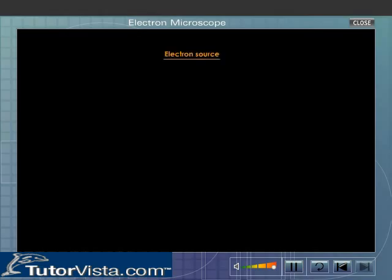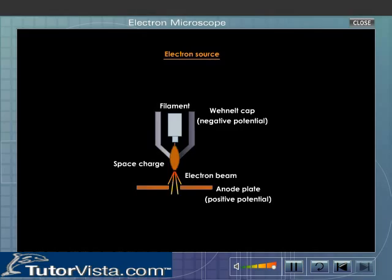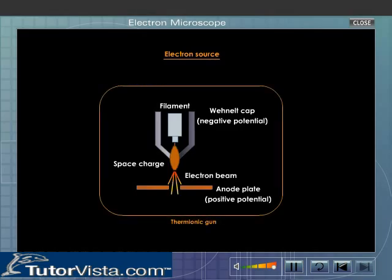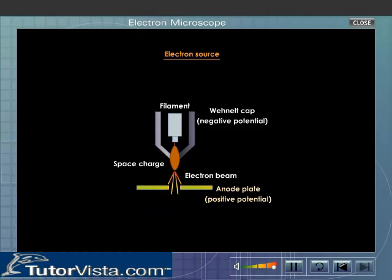Electron Source. All electron microscopes generally use a thermionic gun as a source of electrons. A thermionic gun is shown here. A positive electric potential is applied to the anode plate. The filament which is the cathode is heated until a stream of electrons is produced. The electrons are then accelerated by the positive potential down the column.